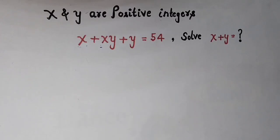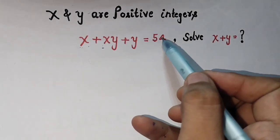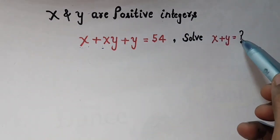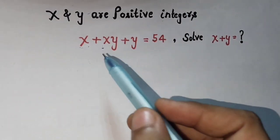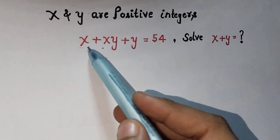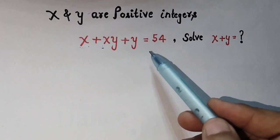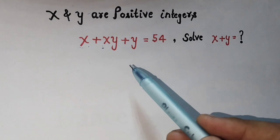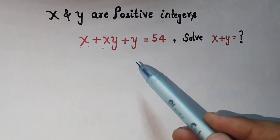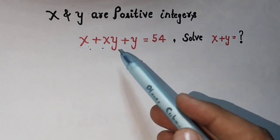Hello students, today in this video we are going to solve a nice algebraic equation: x plus x times y plus y equals 54, and we solve for x plus y, where x and y are positive integers. The main challenge is that we have two variables but only one equation. If we had a two-equation system we could easily find x and y, but unfortunately we do not, so we need another approach.